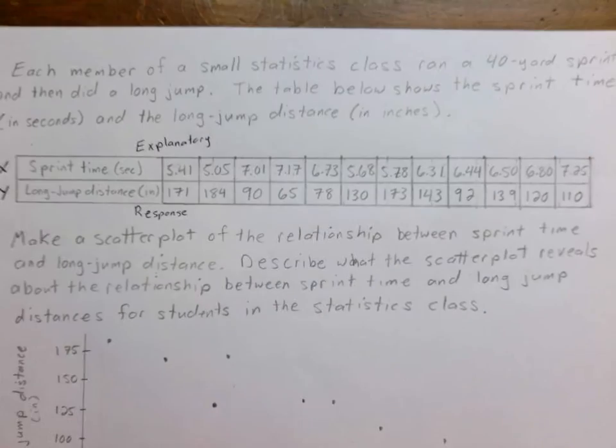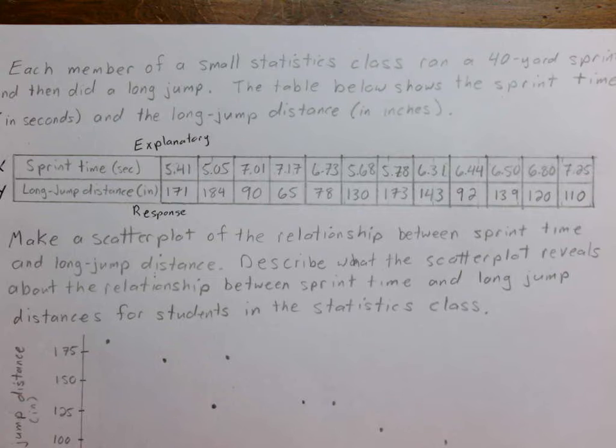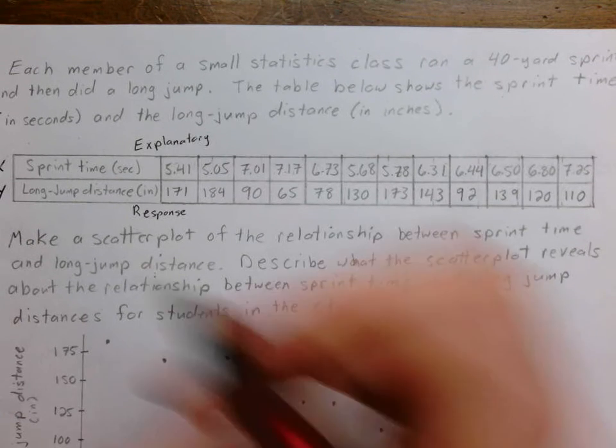The question asks us to make a scatter plot of the relationship between sprint time and long jump distance, and describe what the scatter plot reveals about the relationship. I want to pull out the things that are important. The first thing they ask us to do, number one, is make a scatter plot.